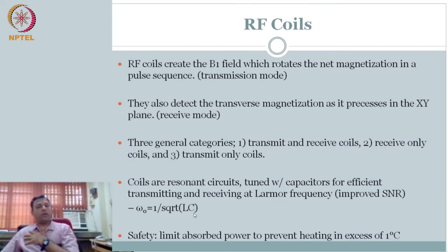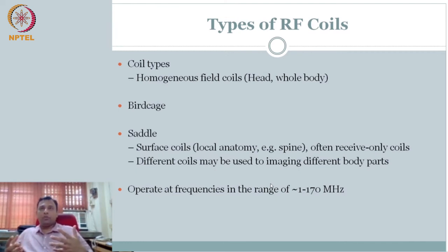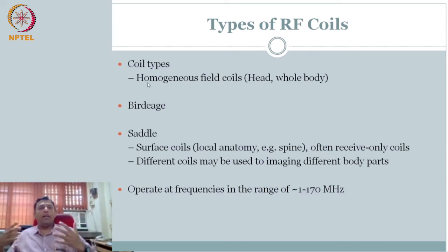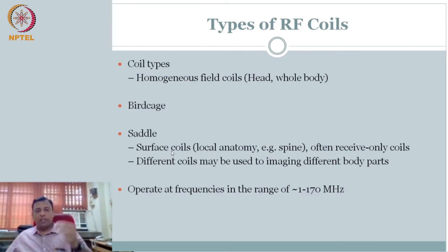You have a coil with a safety limit because heat can be generated — it is usually done to keep the temperature rise less than one degree. Types of coils: you can have different types. Apart from transmit/receive, you can have a big coil with a homogeneous field — for the whole body or whole head — any location. This is a whole body coil. You can also have dedicated coils: birdcage, saddle, or surface coil — for knee, elbow — a dedicated receive-only coil for a particular location.